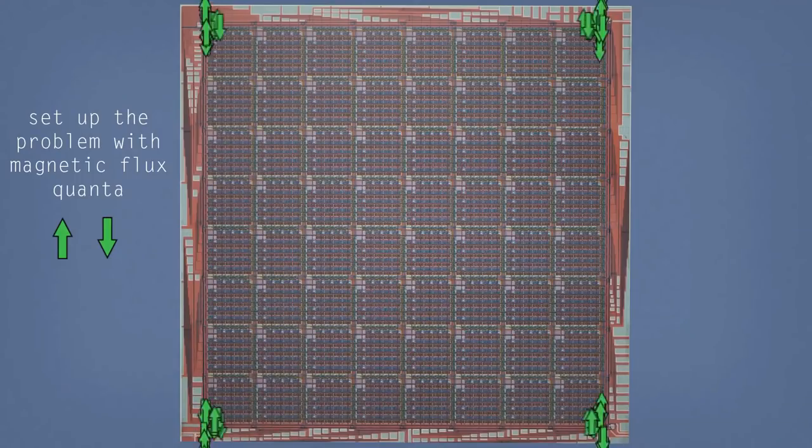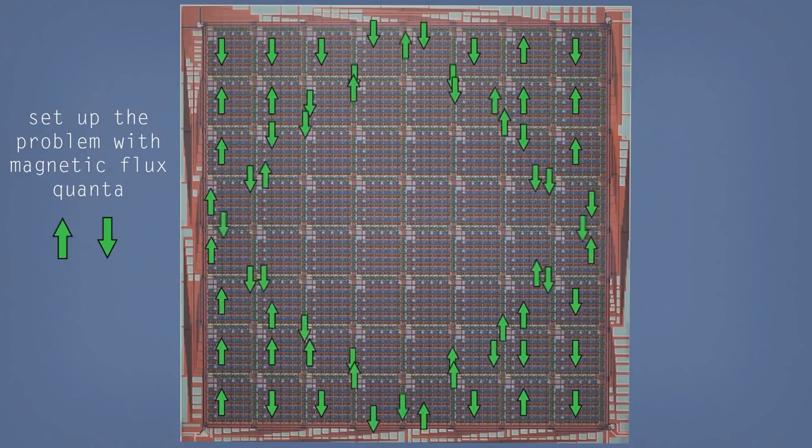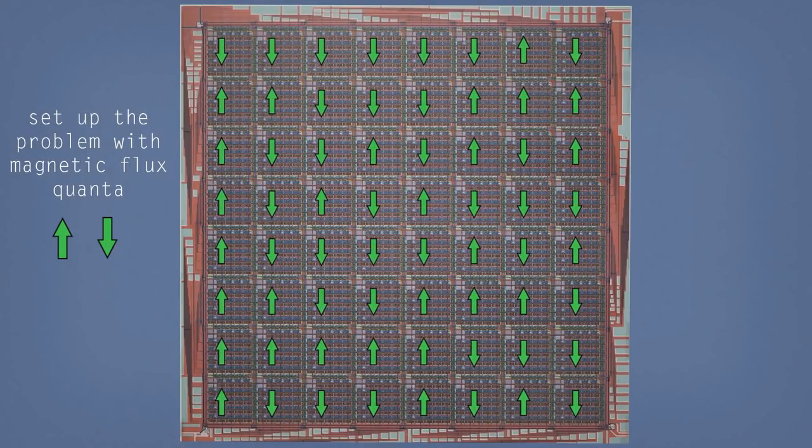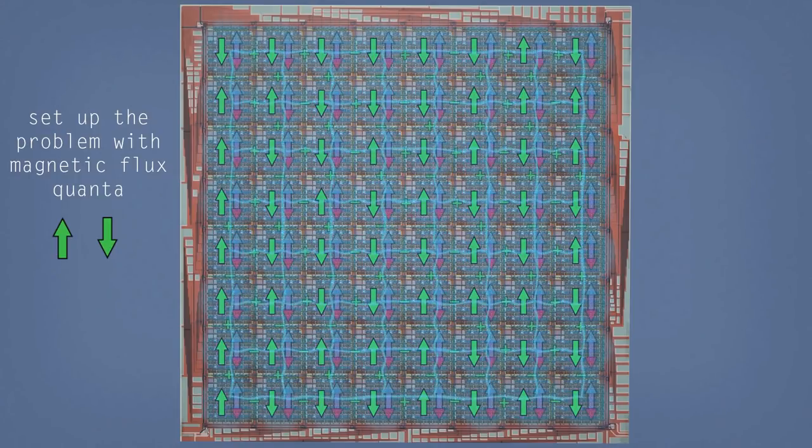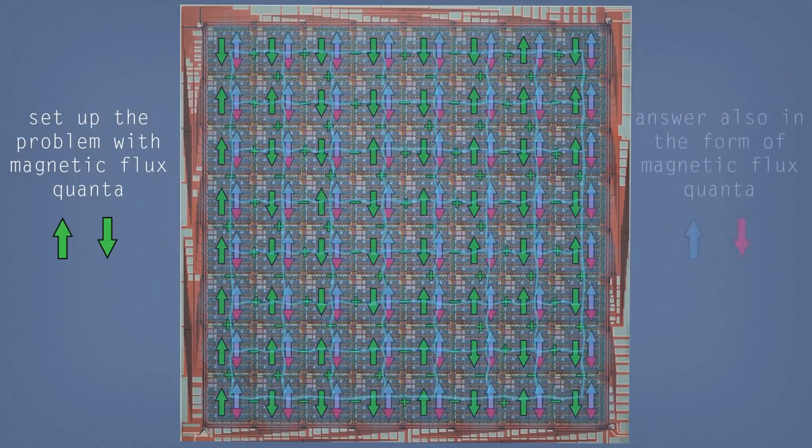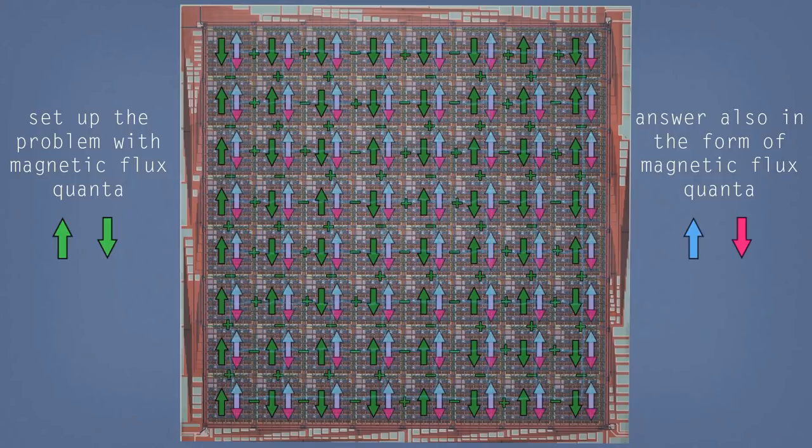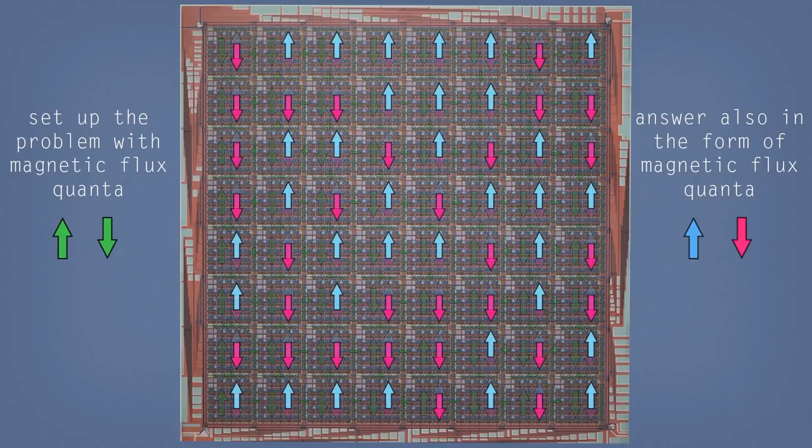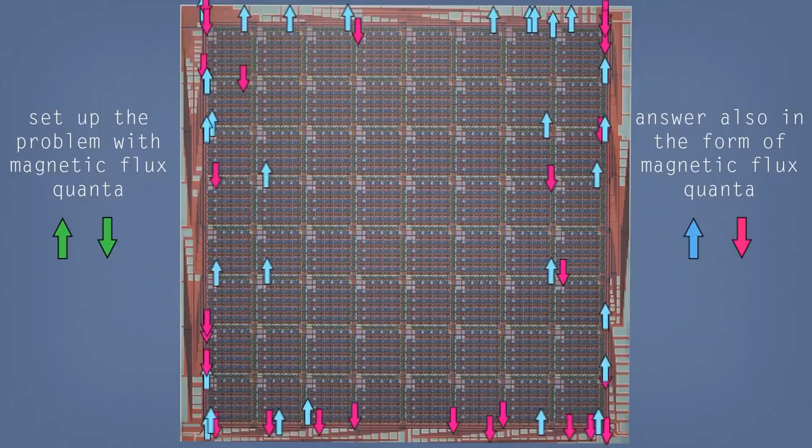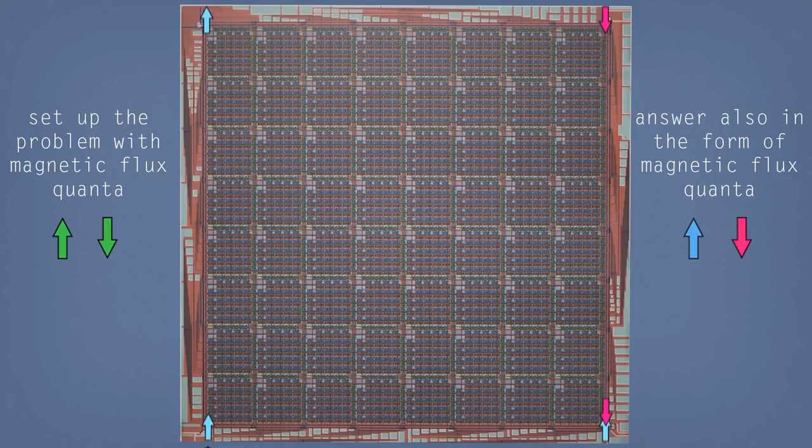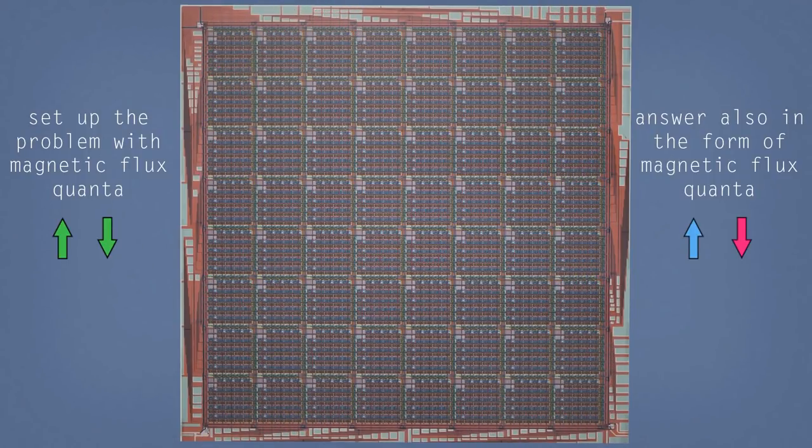When we're programming the processor, we load hundreds of thousands of these flux quanta into the chip, into various circuits. Then the processor undergoes this algorithm of quantum annealing, which is how it solves the problem that we've posed to it. At the end of that, the answer is in the form also of magnetic flux quanta, which are then pulled out of the processor to the four corners and then up into the room temperature electronics and onto our conventional computer.